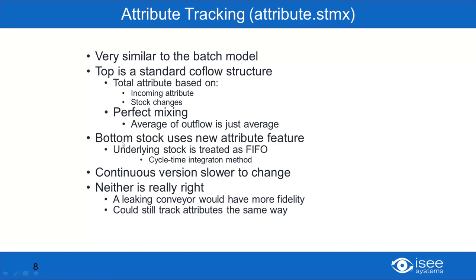In this model, I put in a bottom stock that uses the attribute feature to push the attribute into the stock, which is treated as a FIFO queue effectively. Using the cycle time integration method allows us to keep track of how much of that attribute comes out and what is in the stock. We're going to notice that the continuous version is much slower to change things — and neither is really right. I'm going to show you yet another variation of this that uses a conveyor to track attributes in a similar way.